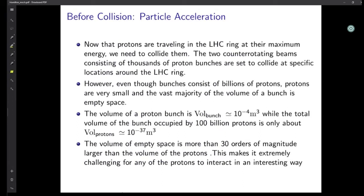Now the protons are traveling in the LHC ring at their maximum energy and we need to collide them. There are two counter-rotating beams of proton bunches in the same LHC ring, and they collide at specific locations around the ring — at the places of the detectors. However, even though bunches consist of billions of protons, protons are very small and the vast majority of the volume of a bunch is empty space. The volume of a proton bunch is 10 to the power of −4 cubic meters, while the total volume occupied by 100 billion protons is only about 10 to the power of −27 cubic meters. The volume of empty space is more than 30 orders of magnitude larger than the volume of the protons, making it extremely challenging for any protons to interact or collide.